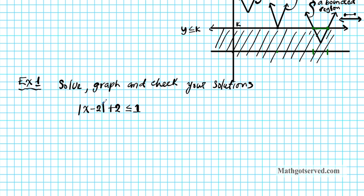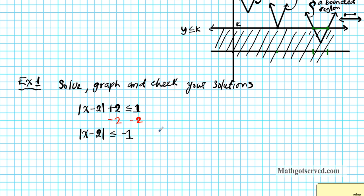Let's examine what we have. This inequality is saying that a distance — which is what absolute value represents — is less than a negative number. Is it possible for a distance to be less than a negative number? The answer is no, because distances are 0 or positive; they can never be negative. So in this case we have no solution.